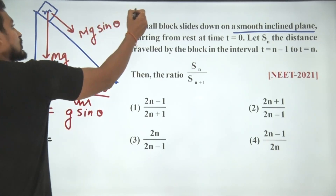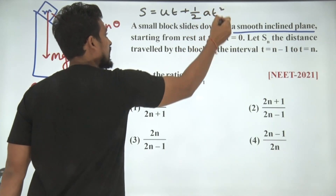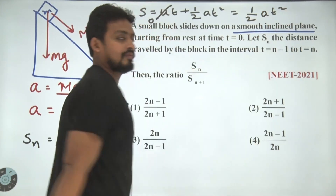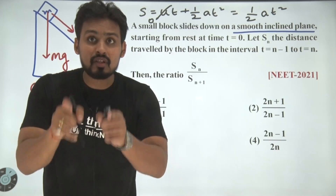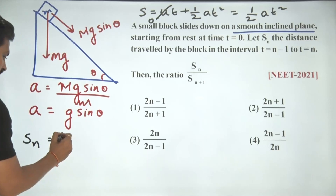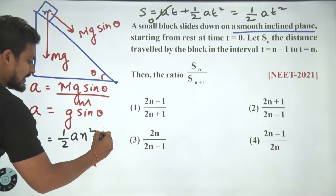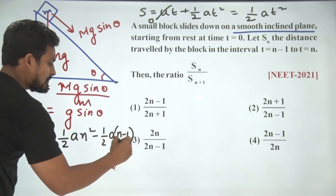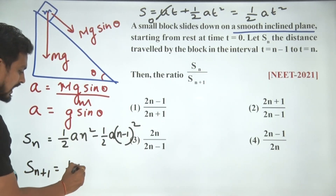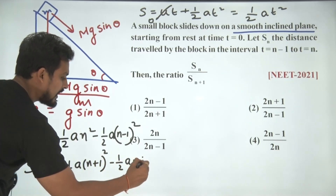Since the initial velocity is 0, using s = ut + ½At², with u = 0, this becomes ½At². So Sn = ½A·n² − ½A·(n−1)². And S(n+1) = ½A·(n+1)² − ½A·n².